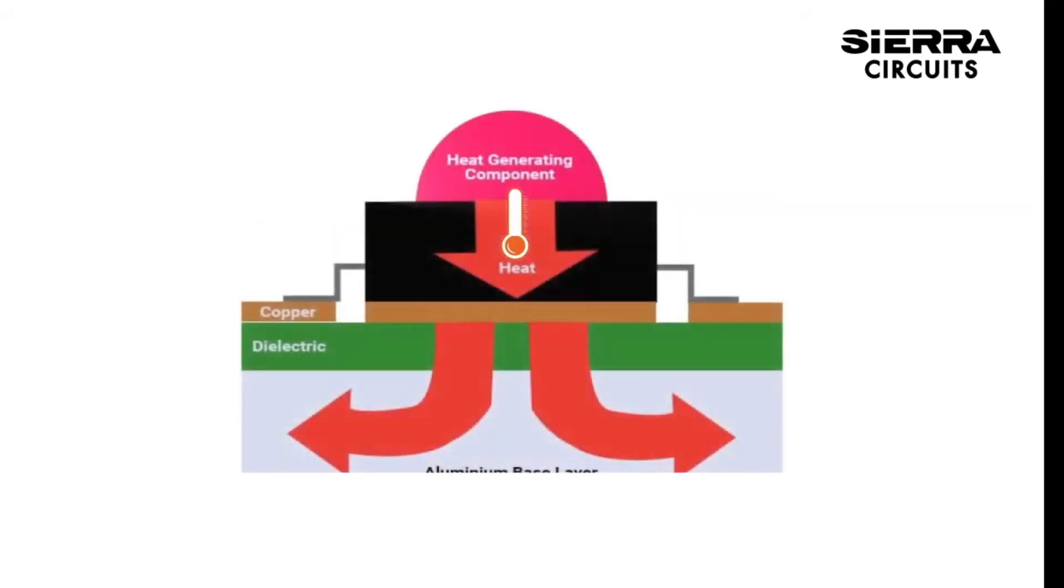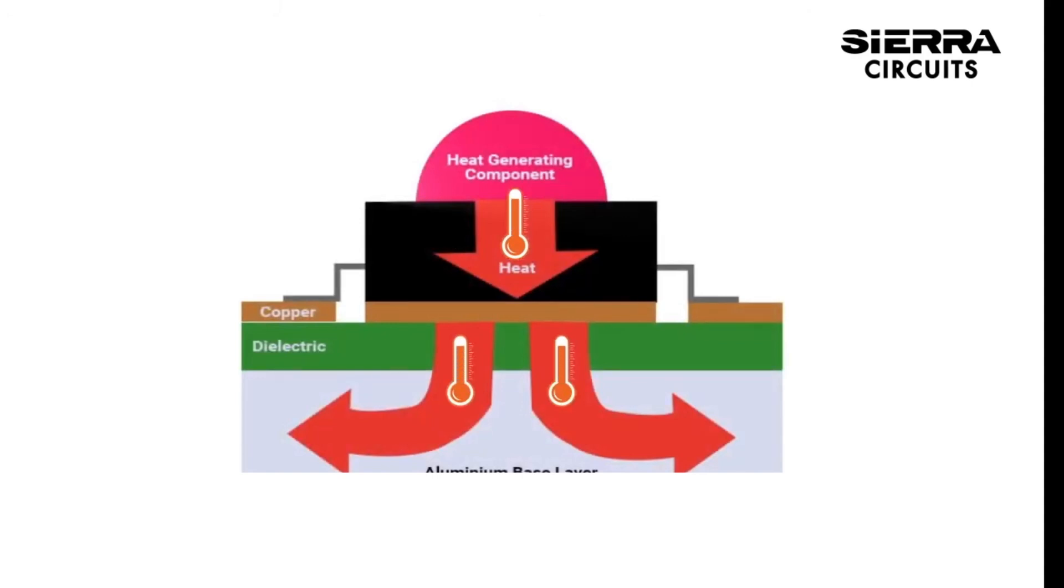The basic structure of MCPCB comprises of solder mask, circuit layer, copper layer, dielectric layer, and metal core layer.